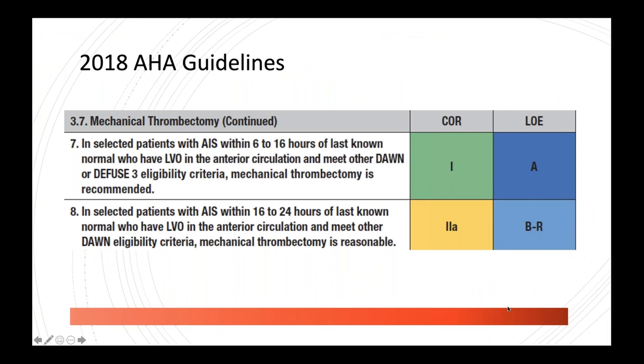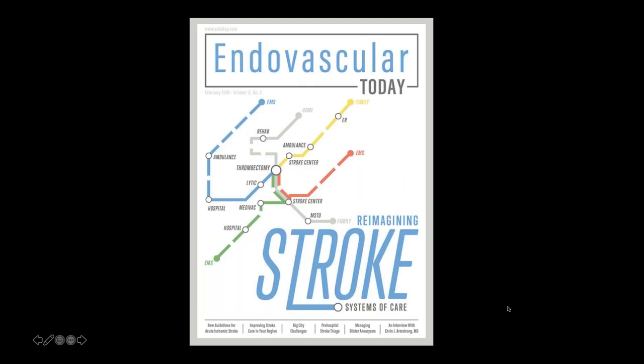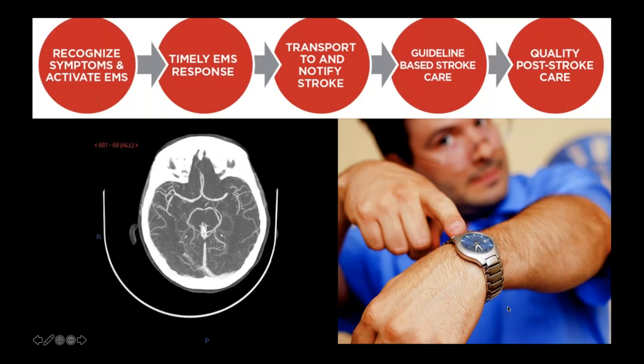In 2018, the DAWN trial and DEFUSE-3 trials were published, causing the AHA to redo guidelines allowing us to screen people up to 24 hours. This has caused a lot of reorganizing of how we try to identify these patients — imaging-based patient selection is very important. We've got to move quickly to recanalize these occluded vessels, and there's been a lot of work on stroke systems of care. Before, stroke didn't really have a time-efficient therapy, and things weren't a well-oiled machine.